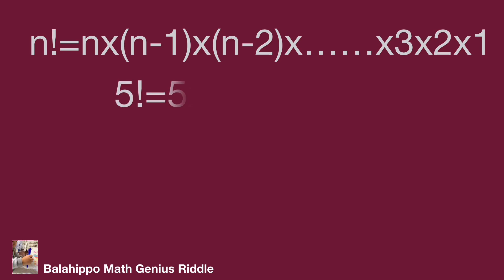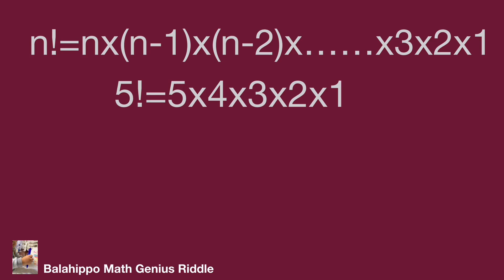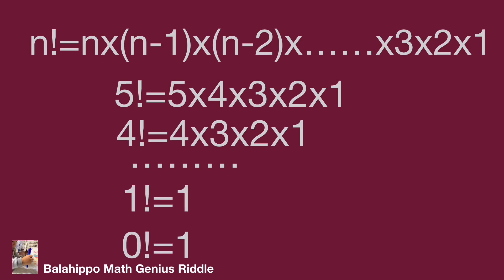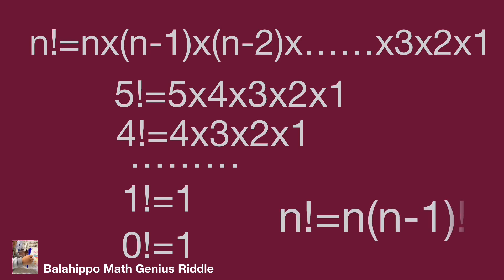For example, 5 factorial equals 5 times 4 times 3 times 2 times 1. 4 factorial equals 4 times 3 times 2 times 1, and so on. 1 factorial equals 1. There is another important formula: n factorial equals n times (n minus 1) factorial, such as 5 factorial equals 5 times 4 factorial.